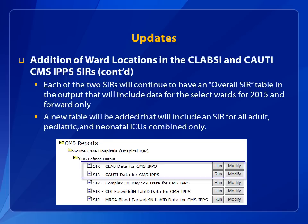In order to accommodate the expanded CMS IPPS reporting requirements, the related standardized infection ratios, or SIRs, for CLABSI and CAUTI data are updated in the following manner. First, beginning with 2015 first quarter data, the overall SIR table in each output represents adult, pediatric, and neonatal ICUs, plus adult and pediatric medical, surgical, and med-surg wards. Second, a new SIR table is added that includes only adult, pediatric, and neonatal ICU data.